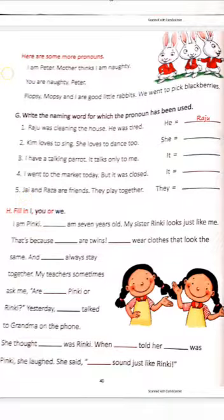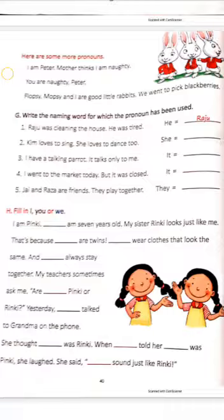Here, write the naming word for which the pronoun has been used. In the first sentence: Raju was cleaning the house. He was tired. Here, 'he' has come in the place of the naming word Raju. Now you do this exercise as your own practice.